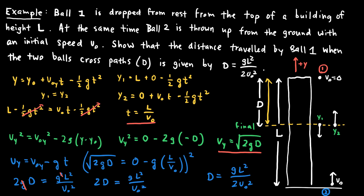Having an equation like this is powerful because now the only two things I need to know to determine how much distance the ball travels before they cross paths — which is a rather complicated piece of information — is just the height of the building and how fast the ball is being thrown up from the ground. I don't need to know any of the other variables.